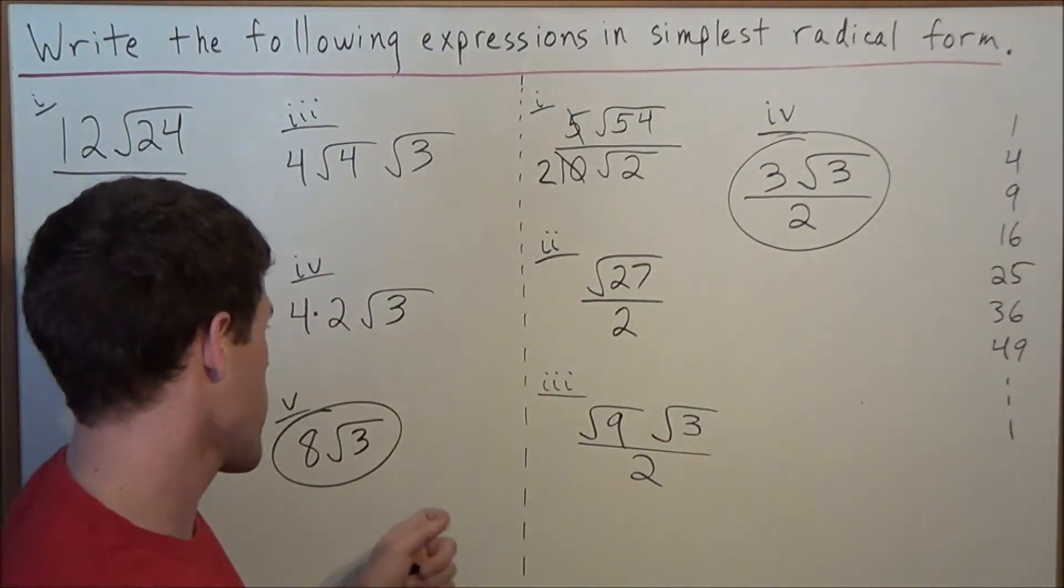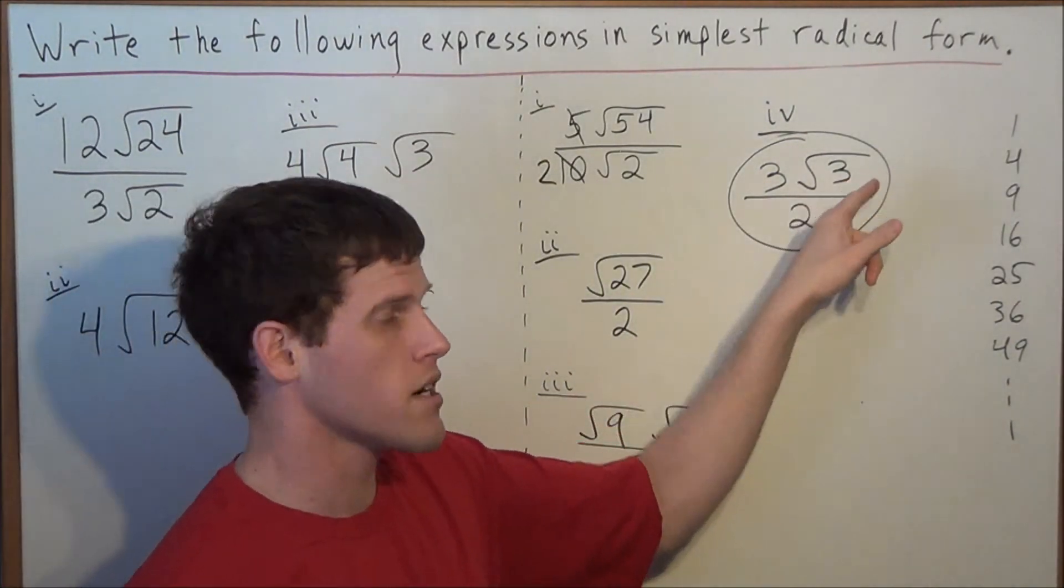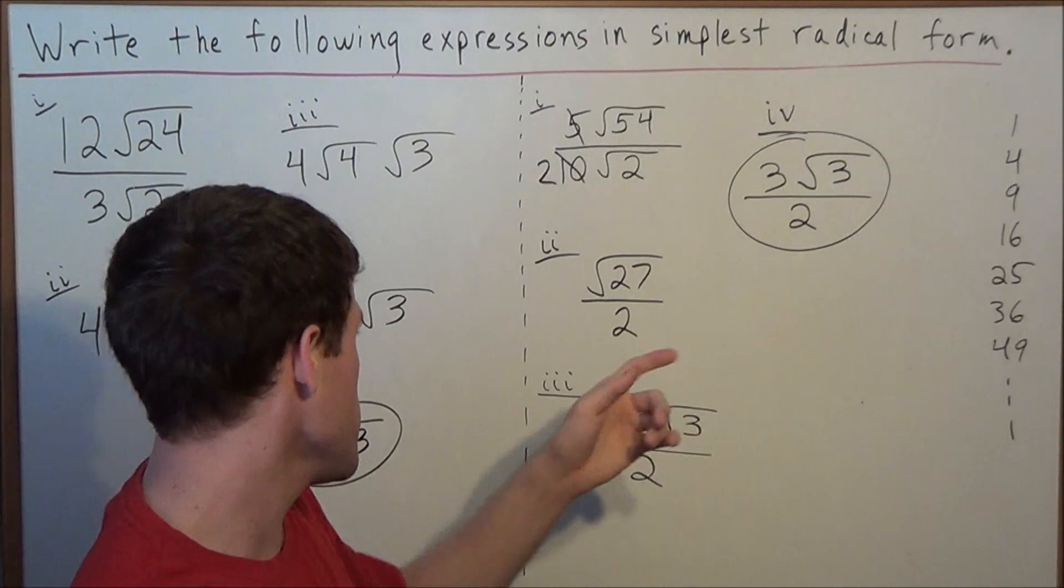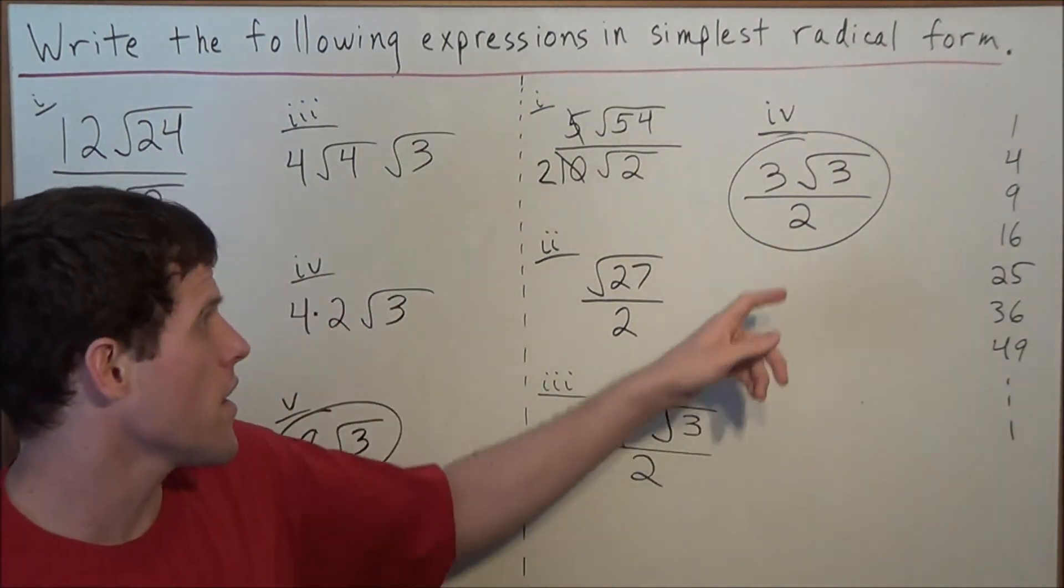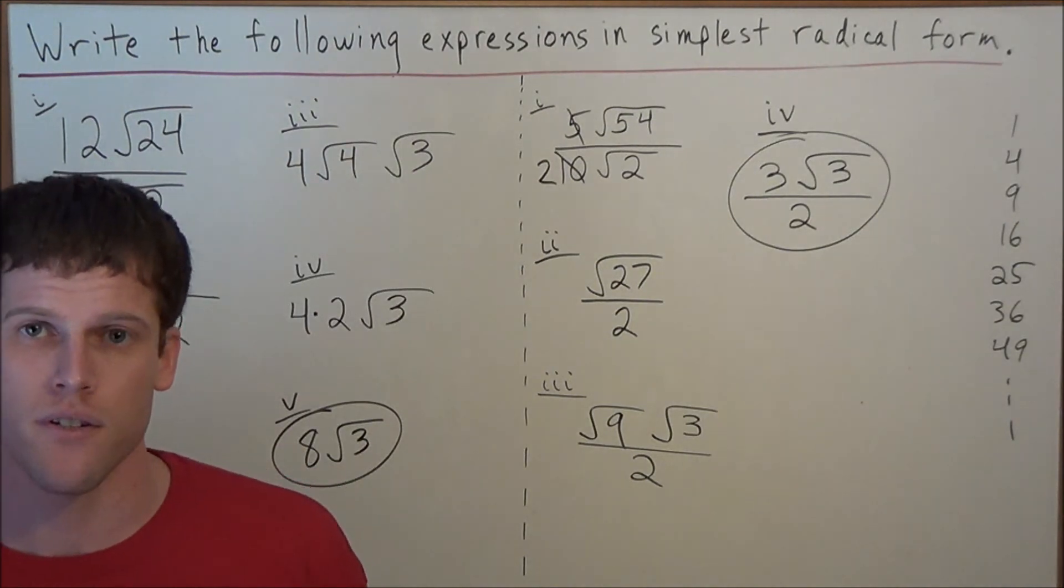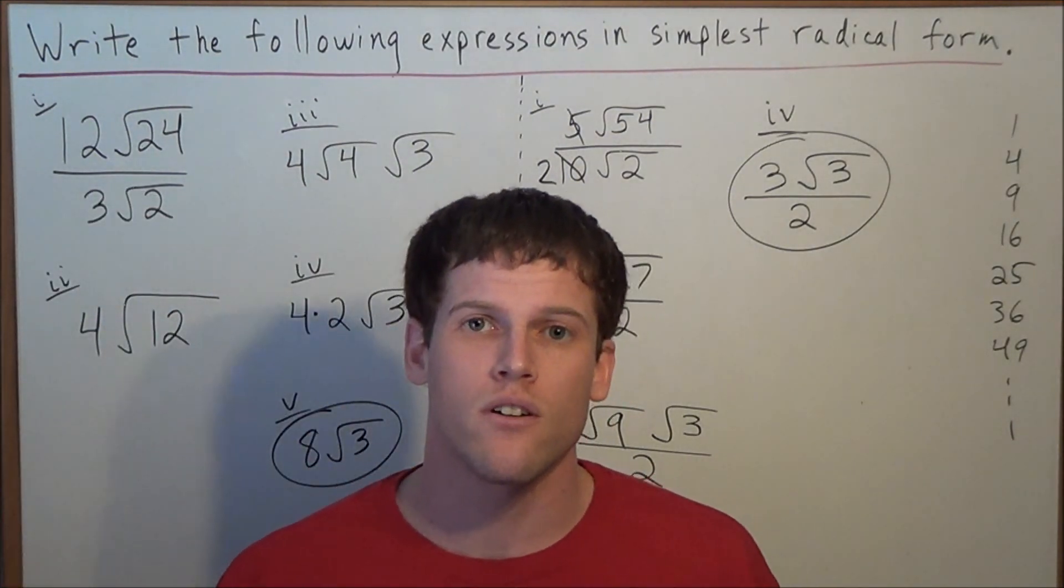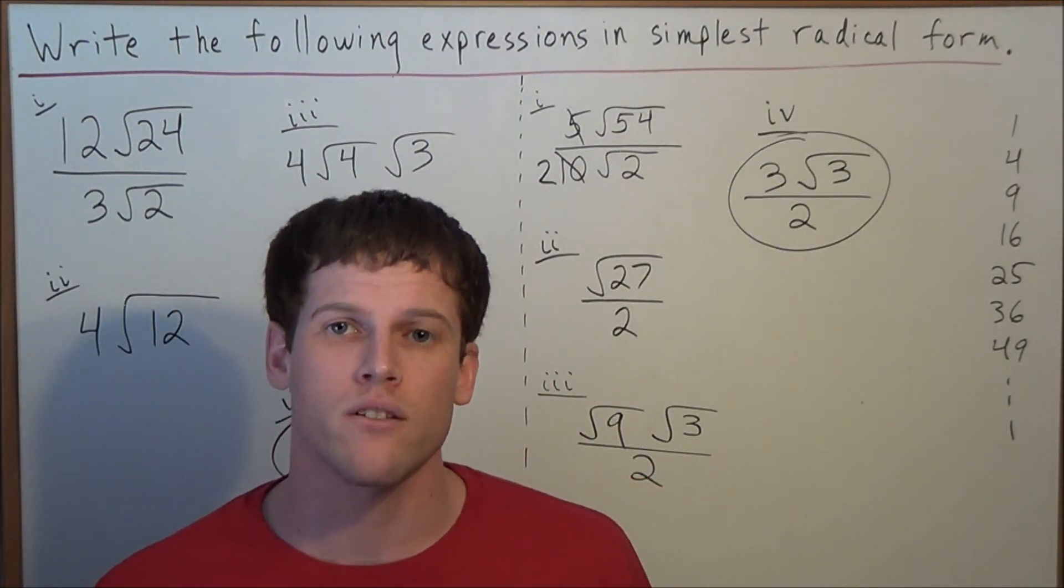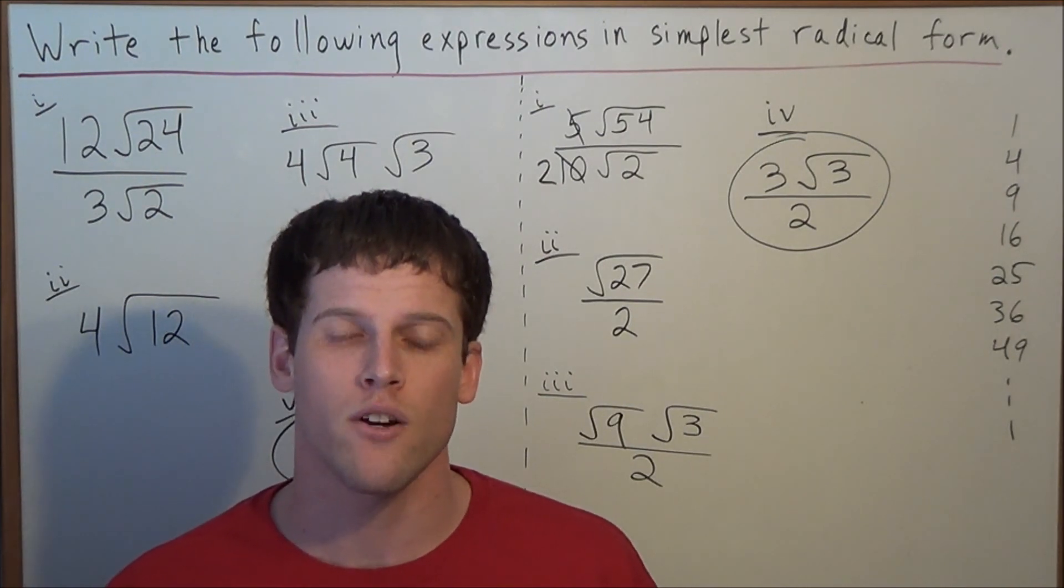Remember to check that our answers are in simplest radical form. We look at the number under the radical, and 3 does not have a perfect square factor other than 1, so it cannot be broken down any further. Well this is going to conclude this video on dividing radical expressions. Thank you all for watching, and I hope that this was helpful.